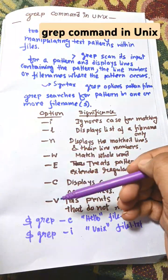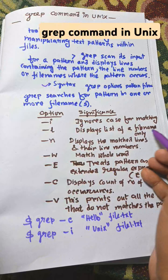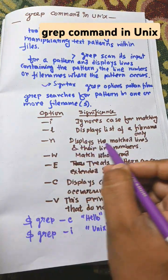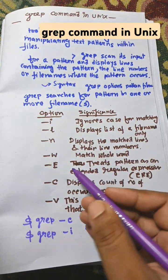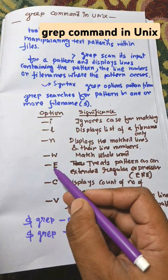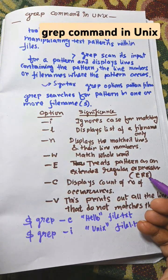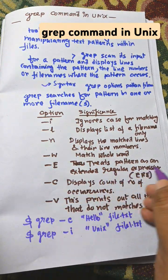Options are hyphen i, which ignores case for matching. Hyphen l displays list of filenames. Hyphen n displays the matched lines and their line numbers. Hyphen w matches whole word. Hyphen E treats pattern as an extended regular expression, that is ERE.